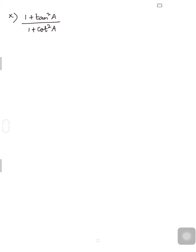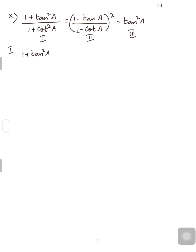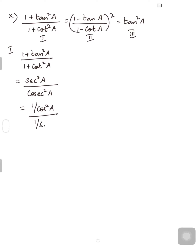Let me teach you the last sum of this exercise: (1 + tan²A)/(1 + cot²A) = ((1 - tanA)/(1 - cotA))² = tan²A. Here three parts should be proved equal. I take this as first, this as second, and this as third. If I prove 1 = 3 and 2 = 3, then all three are equal. Taking the first part: (1 + tan²A)/(1 + cot²A). By identity, 1 + tan²A = sec²A and 1 + cot²A = cosec²A. sec²A can be written as 1/cos²A and cosec²A as 1/sin²A.